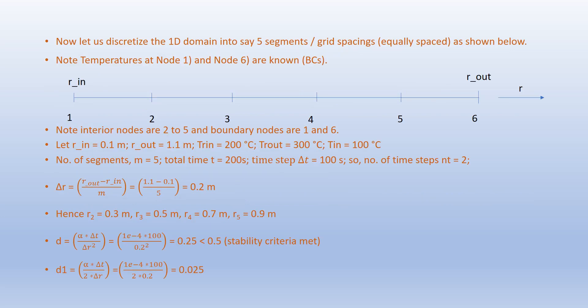Now let us discretize the domain into five segments or grid spacings, equally spaced. Node temperatures at nodes 1 and 6 are known — these are the boundary conditions. Interior nodes are 2 to 5; boundary nodes are 1 and 6. R_in coincides with node 1 and R_out with node 6. Let r_in = 0.1 m, r_out = 1.1 m, T_r_in = 200°C, T_r_out = 300°C, and initial temperature T_in = 100°C.